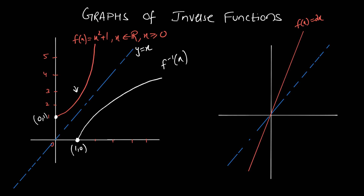Similarly, if you have the function f(x) = 2x passing through the origin, then (0, 0) inverse would be (0, 0) — this point would be the same. You need to make a reflection of this line. For the upper part, the reflection is this, and for the lower part, the reflection would be this.